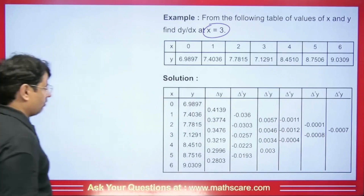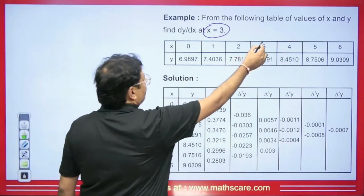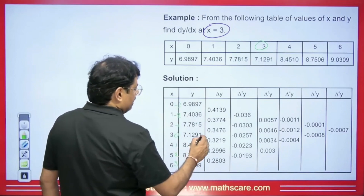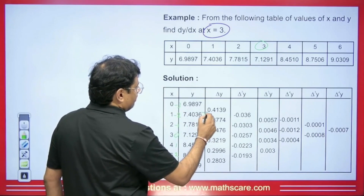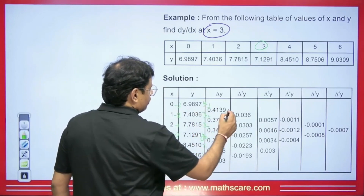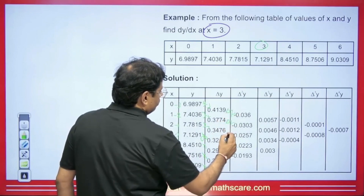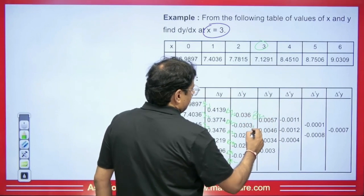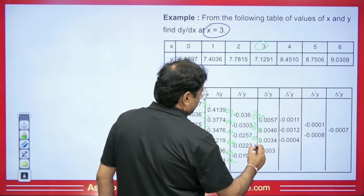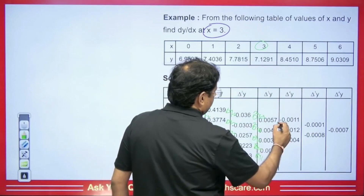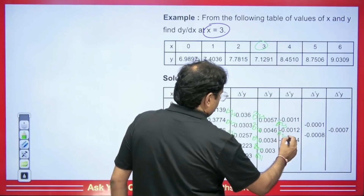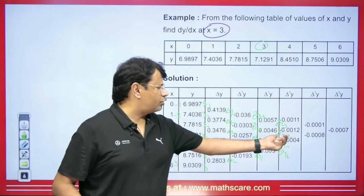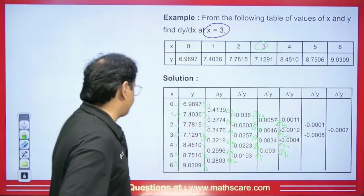Students often get stuck when building the Sterling formula table. Here, whose value do we need to find? We assume the value at X = 3 as Y₀. The values above are Y₋₁, Y₋₂, Y₋₃, and below are Y₁, Y₂, Y₃. Correspondingly: ΔY₋₃, ΔY₋₂, ΔY₋₁, ΔY₀, ΔY₁, ΔY₂; then Δ²Y₋₃, Δ²Y₋₂, Δ²Y₋₁, Δ²Y₀, Δ²Y₁; and Δ³Y₋₃, Δ³Y₋₂, Δ³Y₋₁, Δ³Y₀. We normally stop here as higher values like 0.0004 are negligibly small.